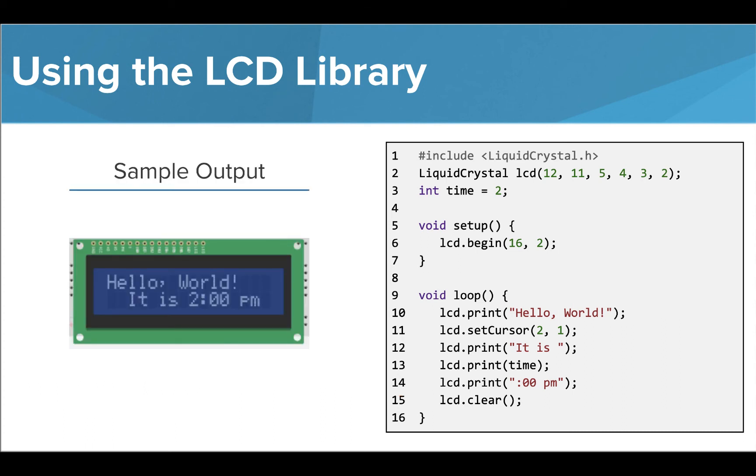When we run this program, we can see that the first text line is printed at the start of the screen in the top left corner. The second line of text is set to start on column 2 and line 1. Remember, these values start at 0.